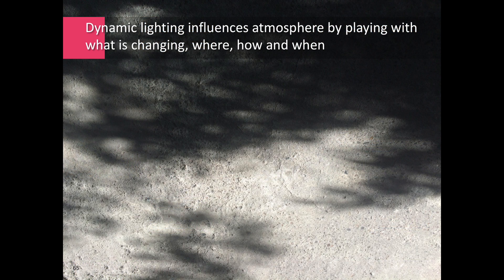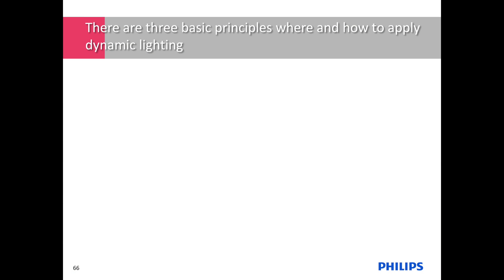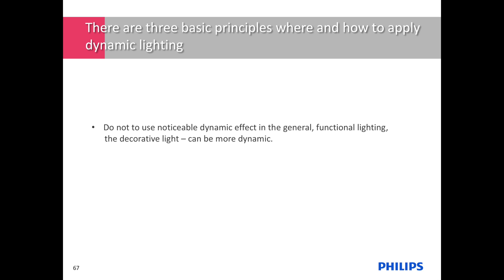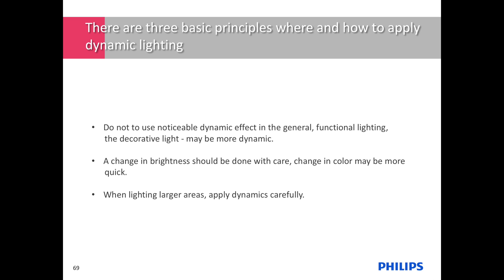We have now arrived at the third building block: dynamic light and its influence on atmosphere. Dynamic lighting can be done in many ways — we have to consider what is changing, where, on which light instrument, how, and when. General principles to consider: avoid noticeable dynamic effects in the general functional lighting; decorative light can be more dynamic. A change in brightness should be done with care because our eye is very sensitive to it. Changes in color can be quicker. Apply dynamics carefully when lighting a larger area.